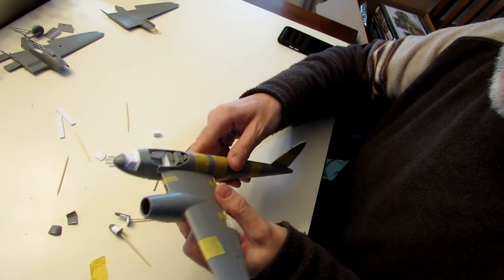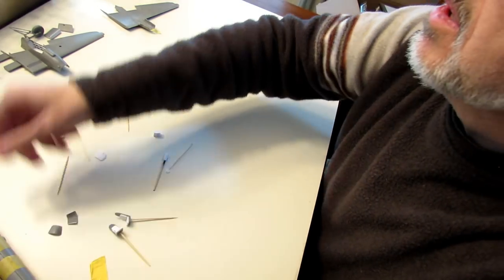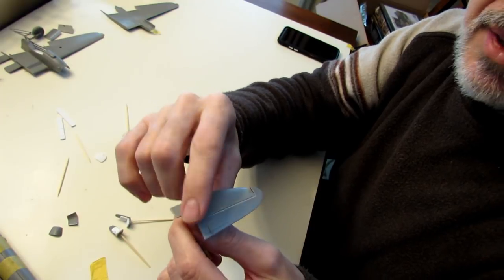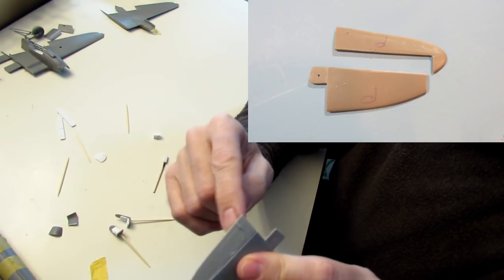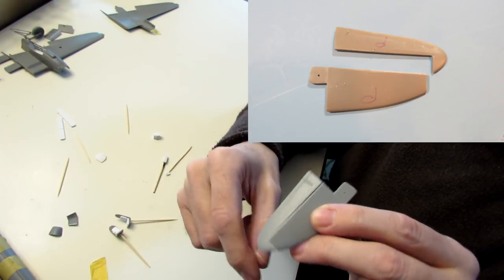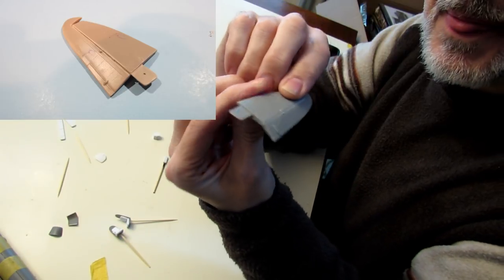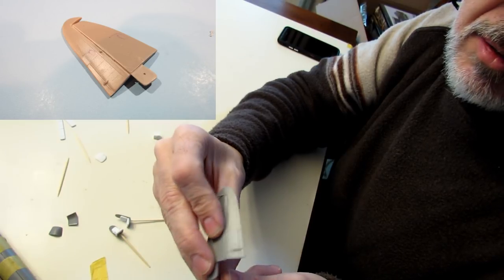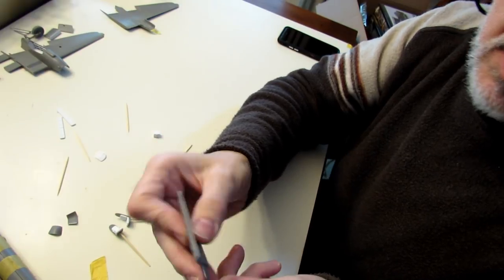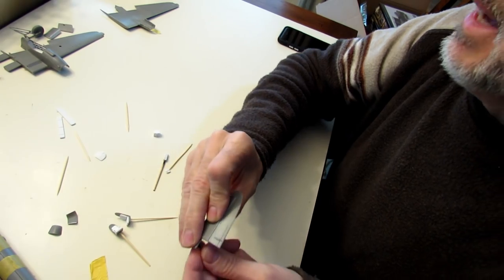Flaps down. I've also on the horizontal stabilizers cut the flaps—the elevators—out of solid, and I've glued those in a downward slope so they're posed now instead of straight. Doing what I can to enhance this kit.